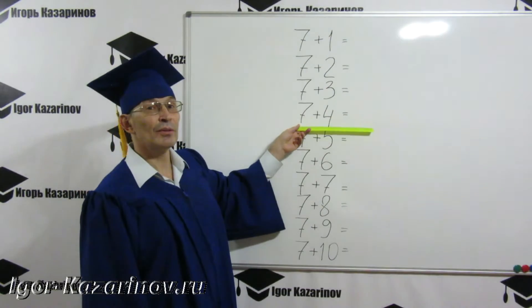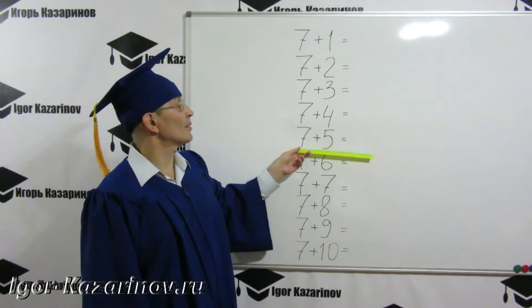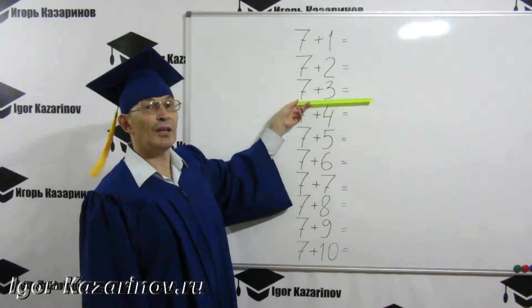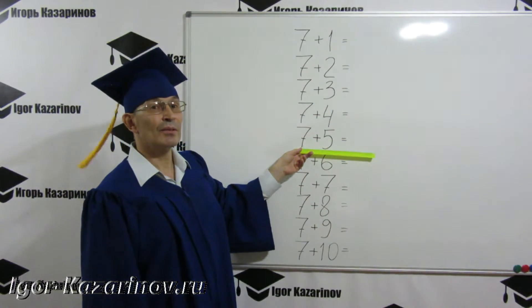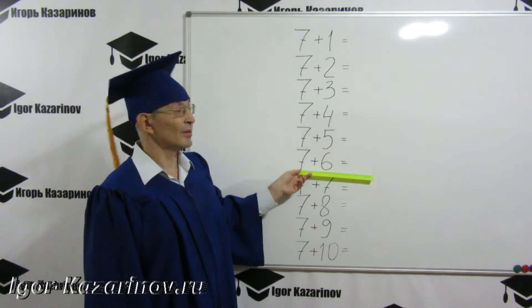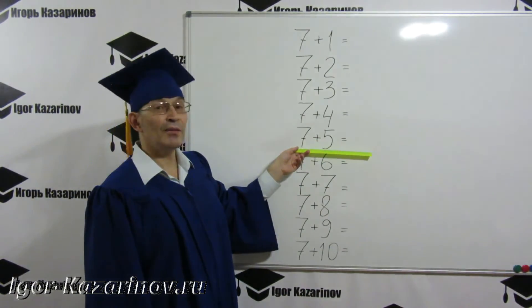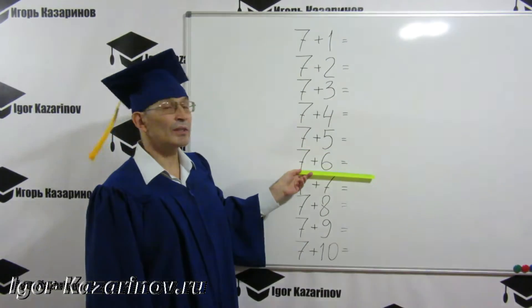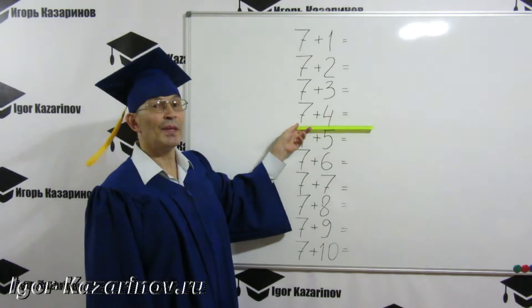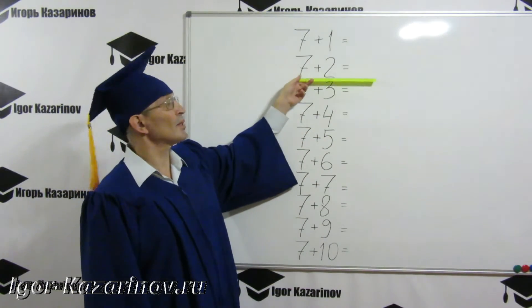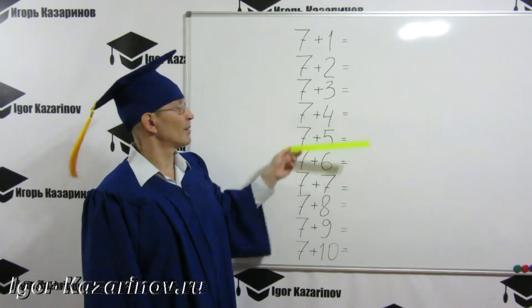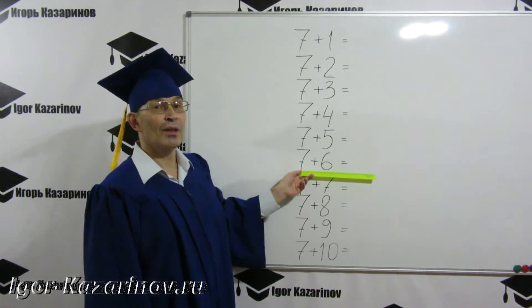7 plus 4, 11. 7 plus 5, 12. 7 plus 3, 10. 7 plus 5, 12. 7 plus 6, 13. 7 plus 5, 12. 7 plus 6, 13. 7 plus 4, 11. 7 plus 2, 9. 7 plus 3, 10. 7 plus 6, 13.